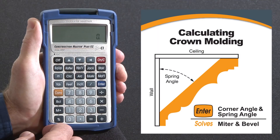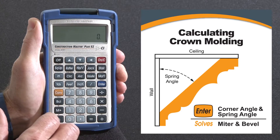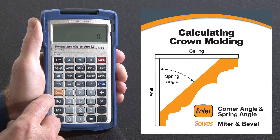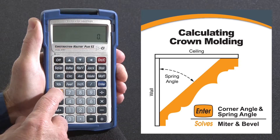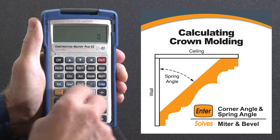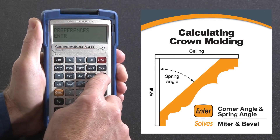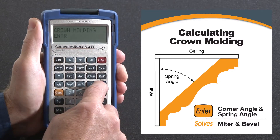Now let me show you how to solve for crown molding miter and bevel cut angles using the built-in crown molding function. Keep in mind this is for those who cut their crown on the flat. I'm going to start off by hitting Convert to clear everything out. The crown molding function is one of the extra keys, which is a second function of Material, so I'd hit Convert, Material, and keep pressing that until I get to Crown Molding — there it is.